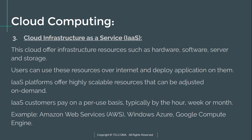Cloud Infrastructure as a Service (IaaS) provides infrastructure resources such as hardware, software, servers, and storage over the cloud. Users can use these resources over the internet and deploy applications on them. IaaS platforms offer highly scalable resources that can be adjusted on demand, and customers pay on a per-use basis, typically by the hour, week, or month. Examples include Amazon Web Services, Windows Azure, and Google Compute Engine. Application developers have no need to buy hardware, software, or storage space for their development.